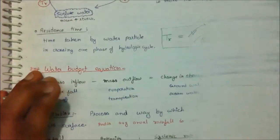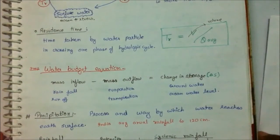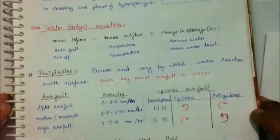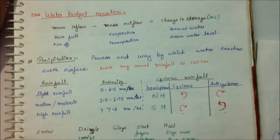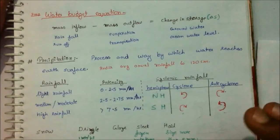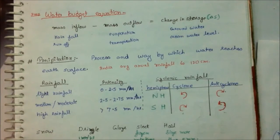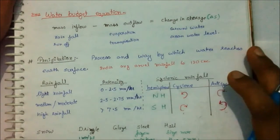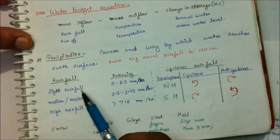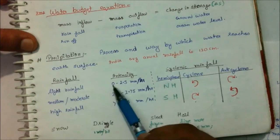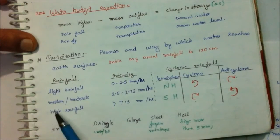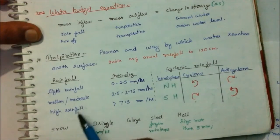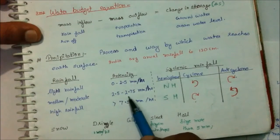Talking about the first hydrological term, which is precipitation. Precipitation is a process and a way by which water reaches earth surface. In India, average annual rainfall means average annual precipitation is 120 centimeter. Now coming up to the types of rainfall: first type of rainfall is light rainfall, which counts up to be 0.0 to 2.5 mm per hour, and second one is medium or moderate rainfall, which counts up to be 2.5 to 7.5 mm per hour.